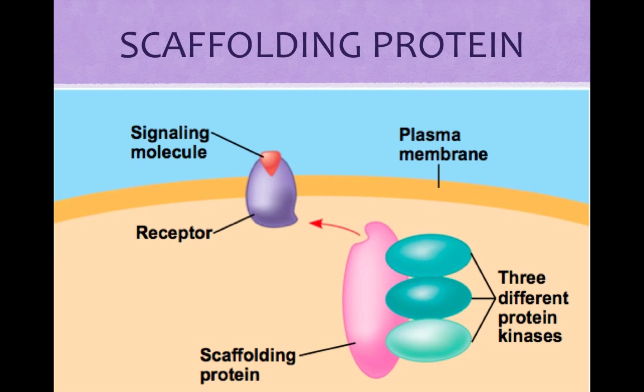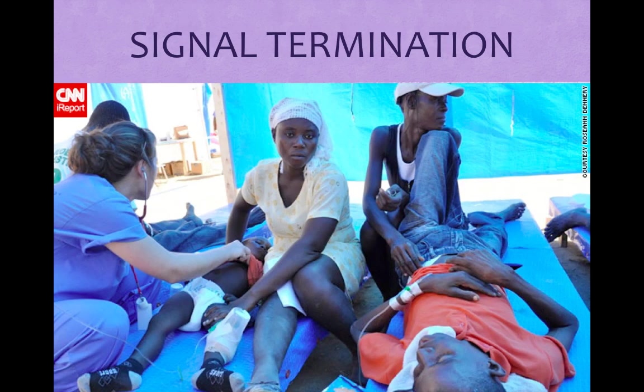Wiscott-Aldrich syndrome (WAS) is the absence of a signal relay protein in the immune system. It can cause abnormal bleeding, eczema, infections, and leukemia. For cells in multicellular organisms to remain alert and capable of responding to incoming signals, each molecular change in a pathway must only last a short time. If a component becomes locked in one state, dire consequences can result — for example, cholera. When signals leave receptors, receptors become inactive, therefore causing relay molecules to become inactive, and the cells become ready to receive a new signal.